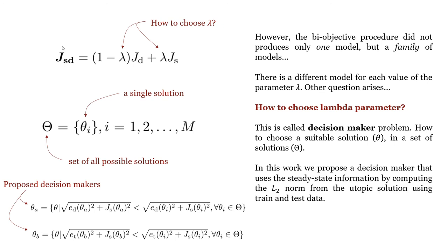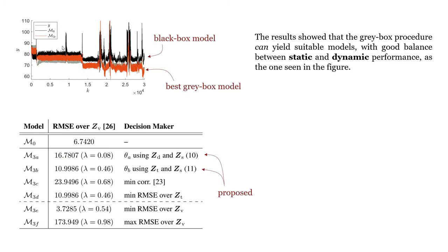In this work, we propose a decision-maker that uses the steady-state information by computing the L2 norm from the utopic solution using trained and test data. The results show that the gray-box procedure can yield suitable models with good balance between static and dynamic performance, as the one seen in the figure.